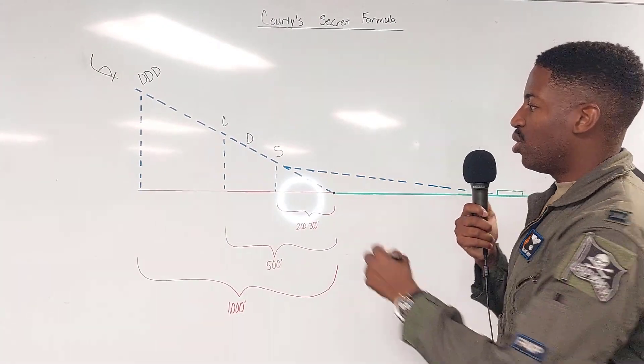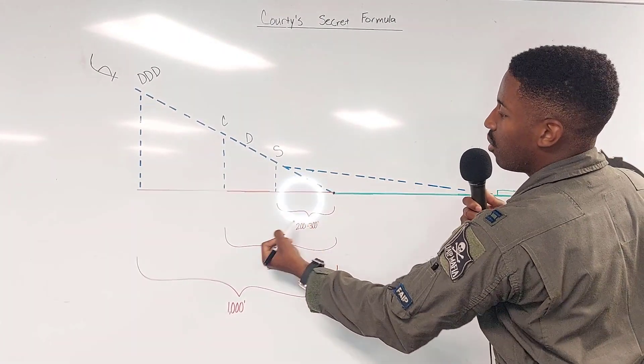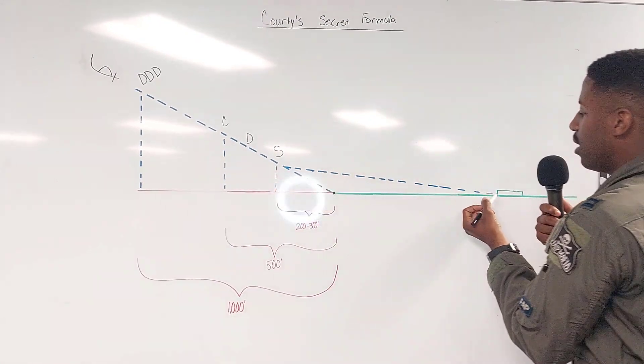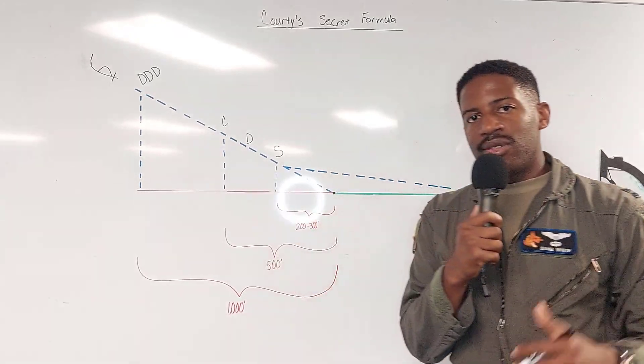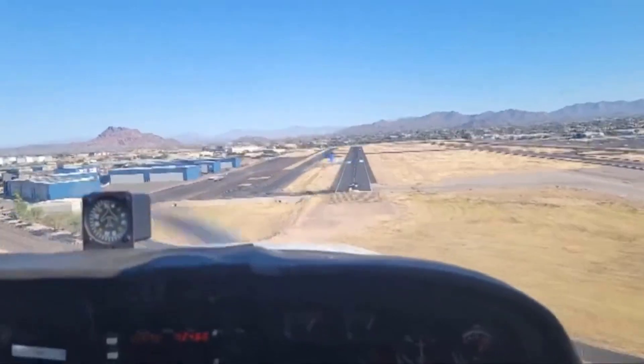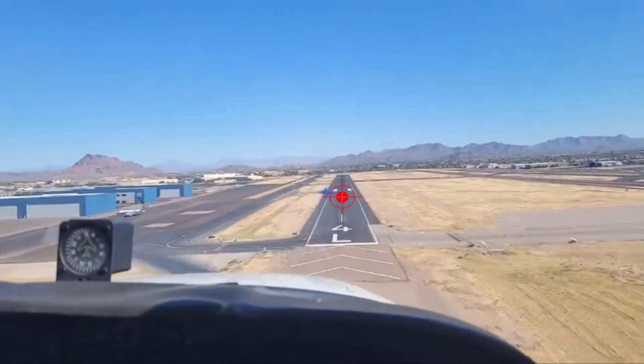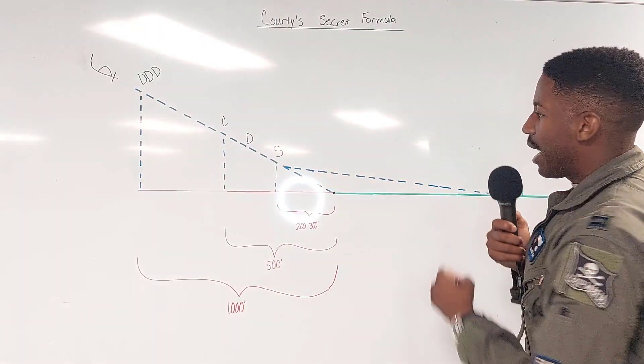Shift. We're going to shift our aim point from the threshold. Two to three hundred feet out, we're going to shift our aim point out to the captain's bars. So from the top: a thousand feet out we're driving at the runway, drive, drive, drive. 500 feet prior, crack my power, drive, shift my aim point to the captain's bars.